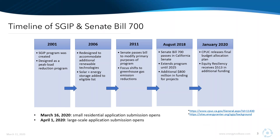The SGIP program, as most of you know, has been around for quite some time — since 2001 actually. It is one of the longest and most successful incentive programs in the country. It's been a big pillar in the growth of distributed energy technologies across the state and extremely essential in the growth of solar and storage projects. It was initially designed as a peak load reduction program, but has evolved quite significantly since then. The program's main focus today is to reduce greenhouse gas emissions through these technologies after a bill was passed in 2011 to shift that focus.